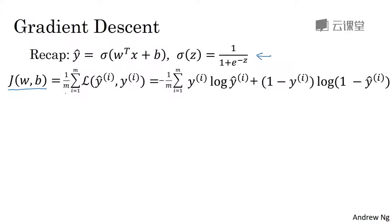And that's defined as the average, so it's 1 over m times the sum of this loss function. And so the loss function measures how well your algorithms outputs, y hat i on each of the training examples, compares to the ground truth label y i on each of the training examples. And the full formula is expanded out on the right. So the cost function measures how well your parameters w and b are doing on the training set.